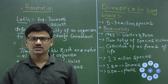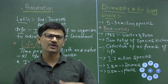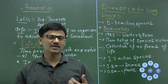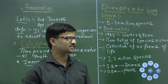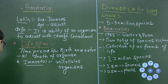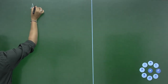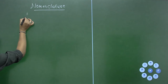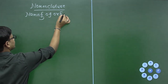In order to avoid this confusion, there should be one standard name so that an animal or plant is known by that standard name all over the world. Giving a scientific and standard name to organisms is called nomenclature. Naming of an organism is called nomenclature.